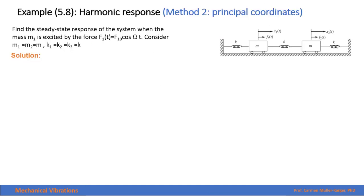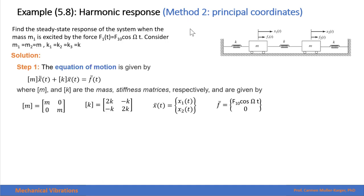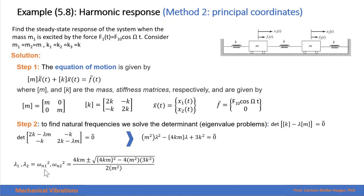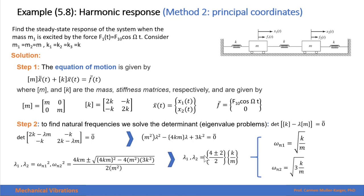We now solve the same problem using the second method: principal coordinates. We have the same system with two equal masses, three equal springs, and the harmonic force applied to the first mass. The first step is finding the equation of motion. The second step is finding the natural frequencies by solving this determinant, which gives us the characteristic polynomial — a second-order polynomial that we solve using the quadratic formula to get the eigenvalues, which represent the natural frequency squares.